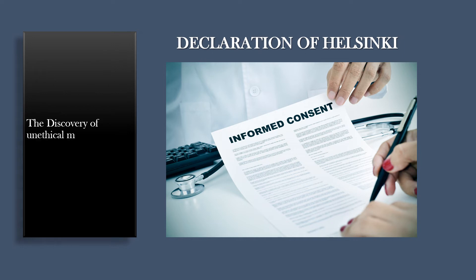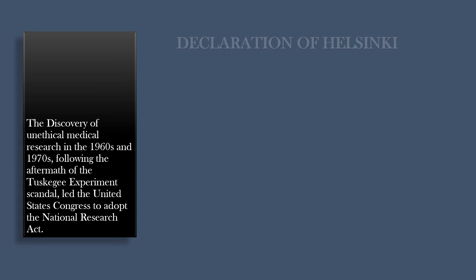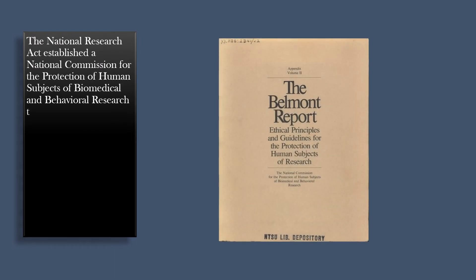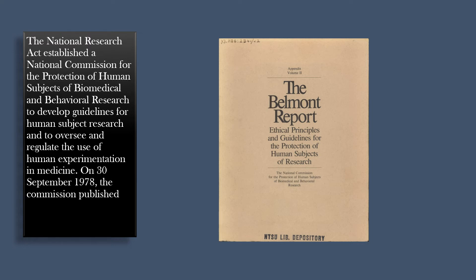The discovery of unethical medical research in the 1960s and 1970s, following the aftermath of the Tuskegee experiment scandal, led the United States Congress to adopt the National Research Act. The National Research Act established a National Commission for the Protection of Human Subjects of Biomedical and Behavioral Research, to develop guidelines for human subject research and to oversee and regulate the use of human experimentation in medicine. On September 30, 1978, the Commission published the final report and recommendations known as the Belmont Report.